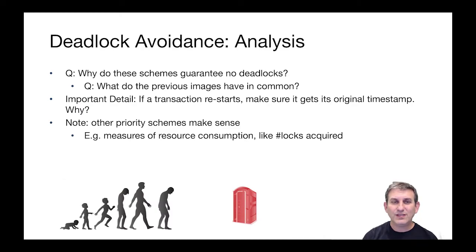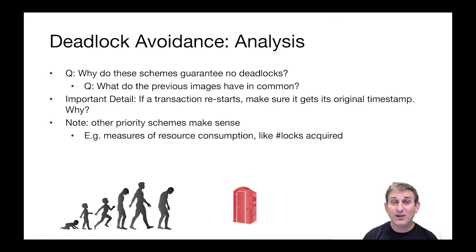Let's analyze deadlock avoidance. Why do these schemes guarantee no deadlocks? Both schemes have something in common: young people, at best, wait for old people, and at worst, young people die. So if we have a series of transactions waiting for each other, we know that those transactions are ordered by age, which means there can't be a cycle of waiting, which means there's no deadlock.